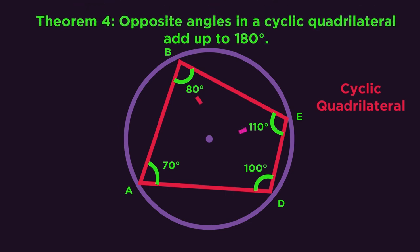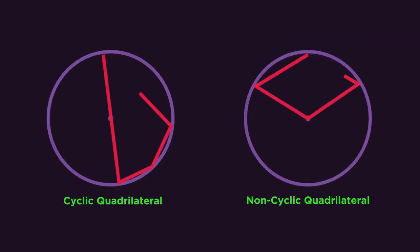I'm sure you all spotted that the opposite angles add up to 180 degrees. So that's our fourth theorem. And the important part to remember is that all four sides must be touching the circumference for it to be a cyclic quadrilateral.